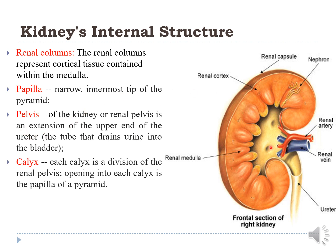The pelvis of the kidney is an extension of the upper end of the ureter — the tube that drains urine into the bladder. The calyces are present next; each calyx is a division of the renal pelvis, with the papilla of each pyramid opening into a calyx. Initially there are minor calyces, which open into major calyces, and the major calyces open into the renal medulla.